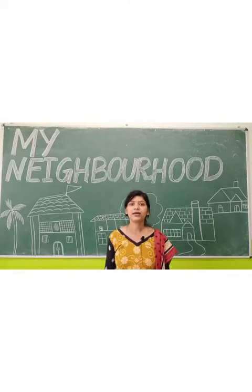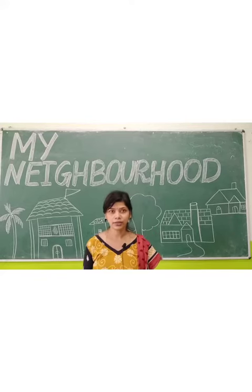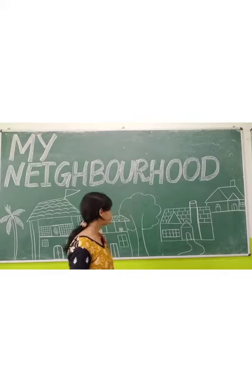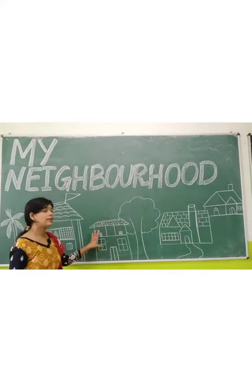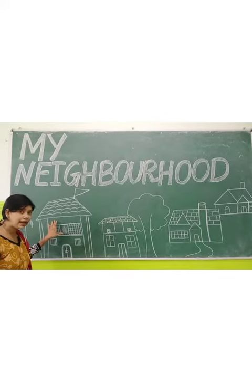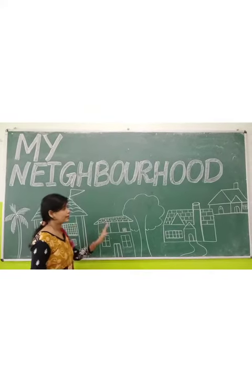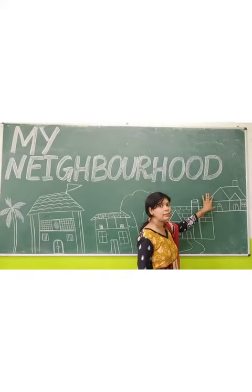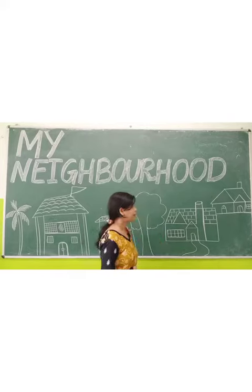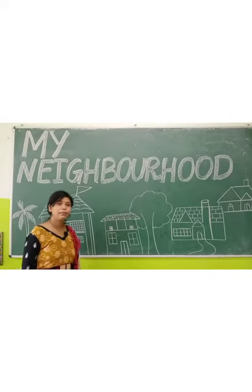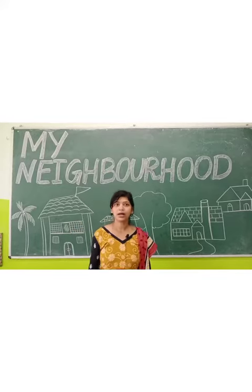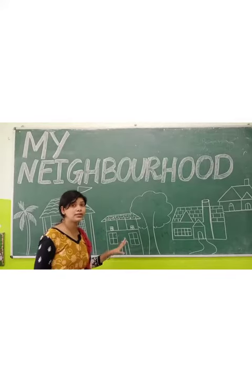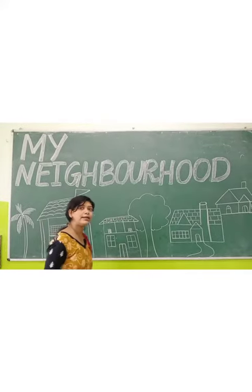So children, we live in a house and near our house, so many houses are there. Here this is my house and near my house it is Mr. Patnai's house, Mr. Mahanti's house, and here is Mrs. Mishra's house. The people who live in those houses are called my neighbors. And this is the area where many houses are situated — this is called neighborhood.